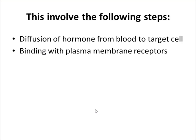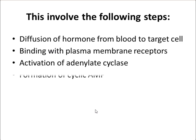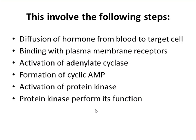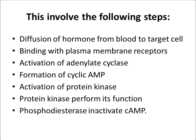The hormones bind with receptors on the plasma membrane surface, which activates the enzyme adenylate cyclase inside the plasma membrane. This enzyme converts ATP to cyclic AMP (cAMP). Cyclic AMP then activates the enzyme protein kinase, which performs its function. Afterwards, another enzyme, phosphodiesterase, inactivates the cyclic AMP, causing the hormone to detach from the plasma membrane.